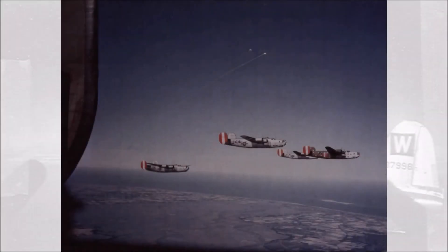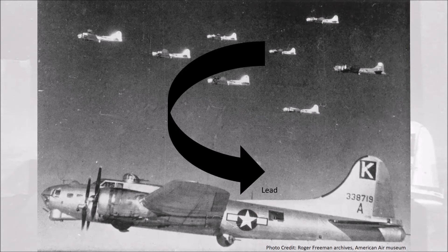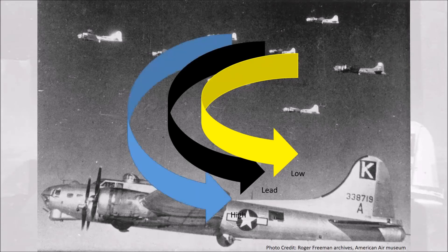During the squadron and group assembly, the lead aircraft will fire flares with their color combination of the day, so that other aircraft can form up on the correct formation. Second division also made use of assembly ships who were painted very recognizably. Correct speed is critical information, especially in a turn like during assembly. In a turn, to stay in formation, the low squadron has to slow down as they have a shorter track to fly.